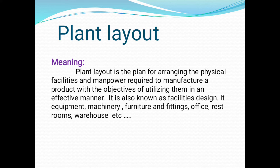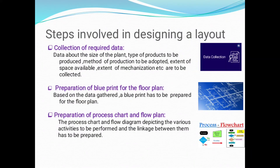Next, let us see about what are the steps involved in designing a plant layout. The first step is collection of required data. Data about the size of a plant, types of product to be produced, method of production to be adopted, extent of space available, and extent of mechanization should be collected clearly.